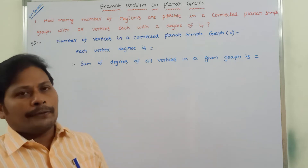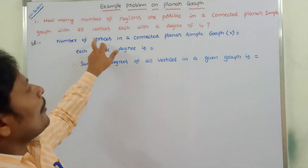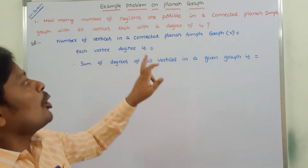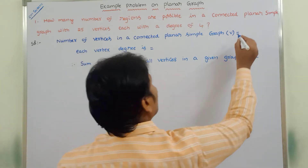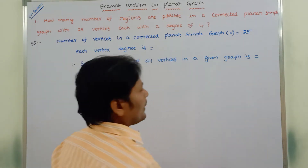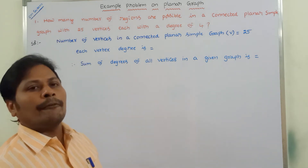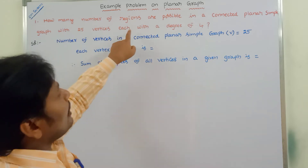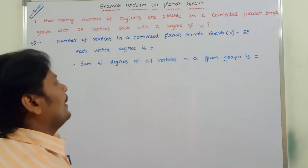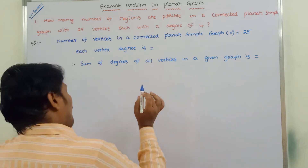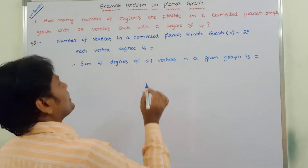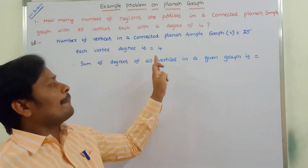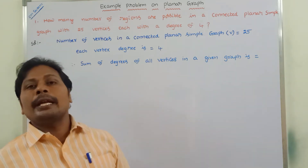The given data of the problem: the number of vertices in a connected planar simple graph V — how many vertices are there? There are 25 vertices, therefore capital V is equal to 25. Each vertex has degree 4; every vertex among the 25 vertices has degree 4.